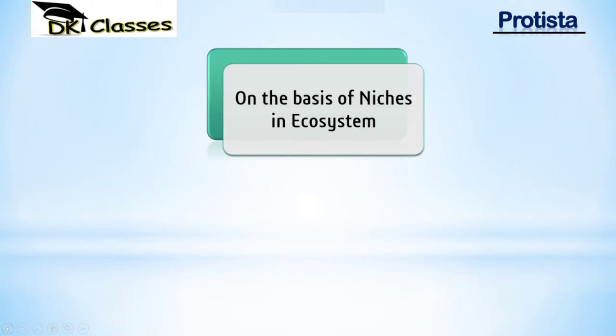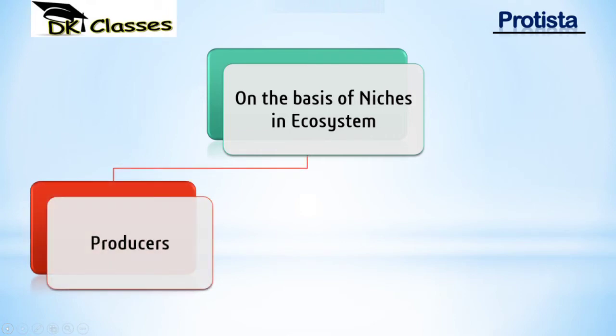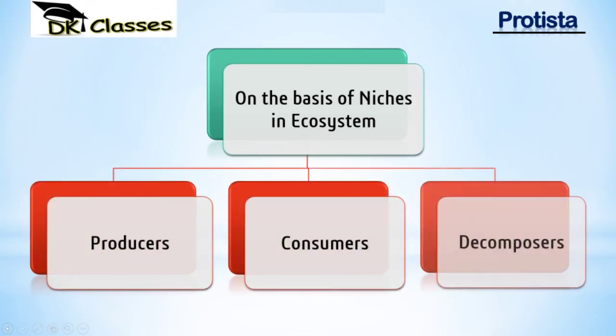On the basis of niche in the ecosystem, Protista can occupy different positions. Producers are those which can make their own food; consumers depend on other organisms for food; decomposers destroy other living beings for food — for example, parasites are a best example of decomposers.